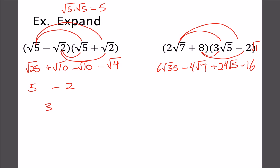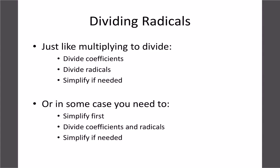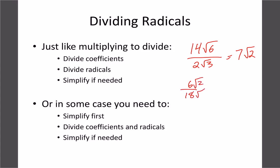Now let's quickly look at dividing — the rules are the same as multiplying but in reverse. With dividing, we divide the numbers. For 14 root 6 divided by 2 root 3: divide the regular numbers to get 7, and divide the roots to get root 2. Sometimes they don't divide evenly — like 6 root 2 over 18 root 6 becomes 1/3 root(1/3), which can also be written as 1 over 3 root 3. We'll get into rationalizing more next week.